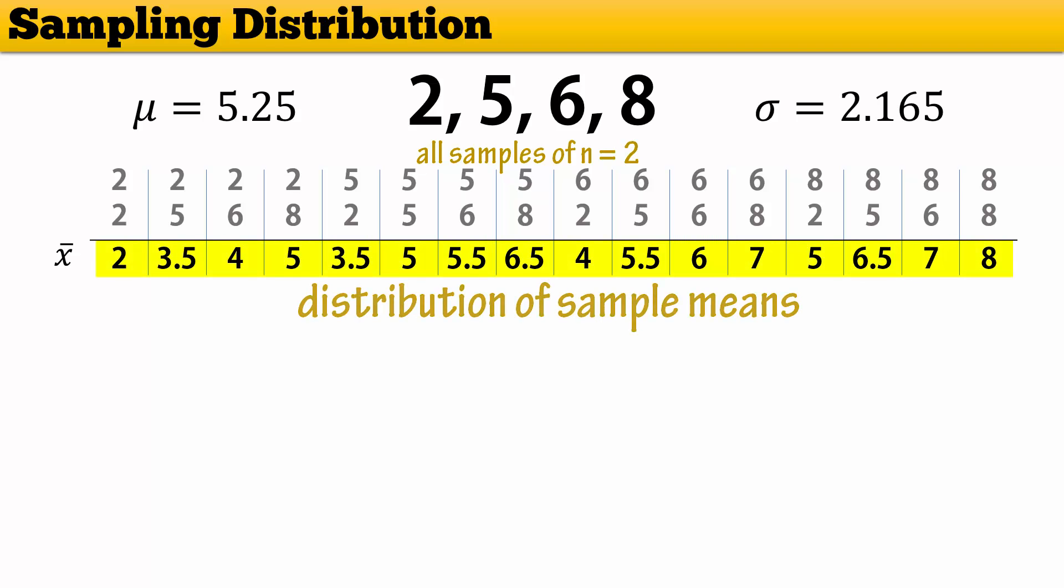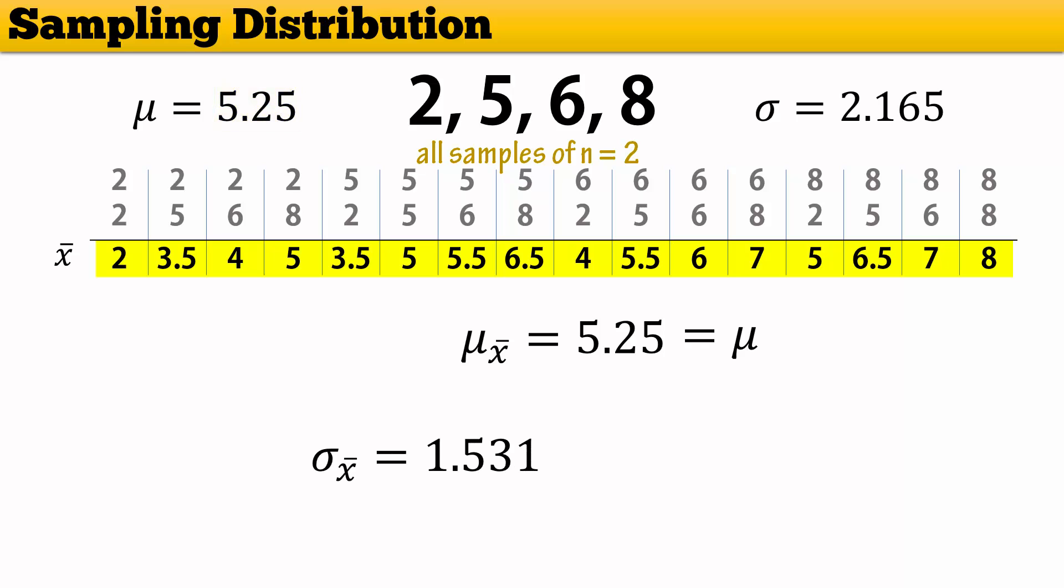We find that the mean of these sample means is 5.25, which is the same as the mean of the original population. And the population standard deviation of the sample means is 1.531, which is equal to the population standard deviation divided by the square root of the sample size used, which is 2.